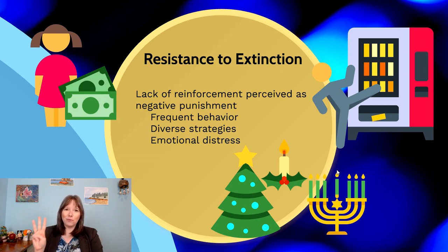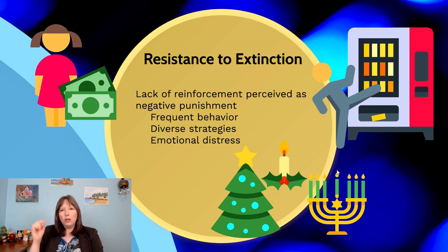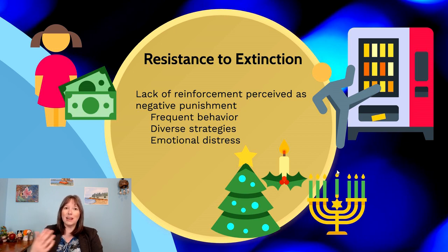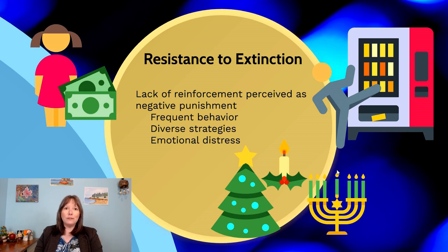Resistance to extinction tends to have three typical patterns. First, rather than a decrease in behavior, we see a temporary huge spike in the frequency of behavior — you'll press the button more, not walk away. Second, you'll try more diverse strategies: pressing buttons differently, trying a different food option, seeing if a gear is stuck. Third, some strategies become aggressive — kicking the machine, rocking it, pounding on the glass, unplugging and replugging it. You become more creative.